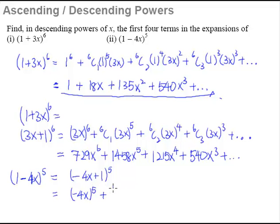So the first term will be (-4x)^5, plus then of course, 5C1. And then -4x down to power of 4. And of course, now 5C2 and -4x raised to the power of 3.